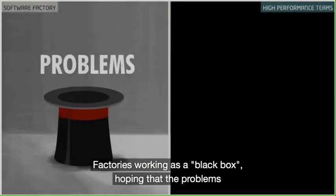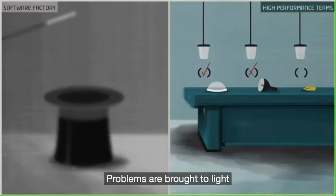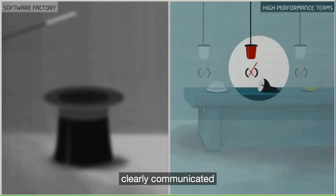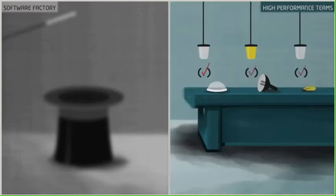Factories work as a black box, hoping that problems disappear before delivery to the customer. Problems are brought to light, clearly communicated, addressed immediately and monitored in a continuous cycle of improvement.